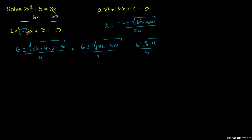Now, taking a square root of negative 4 gives us an imaginary number. The only two roots of this quadratic equation are going to be complex, because when we evaluate this we're going to get an imaginary number. We'll essentially get two complex numbers when we take the positive and negative versions of this root.